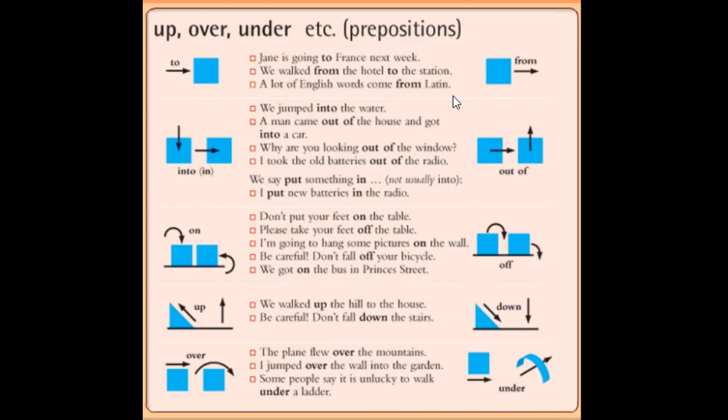Next is 'into' and 'in'. We jumped into the water. So 'into' we can understand is a mix of 'in' and 'to', so it shows direction also. We can see the picture here showing 'into'. 'In' means inside also. When the person was already in the room, we say he is sitting in the room. But we are saying we jumped into the water - we were not in the water before.